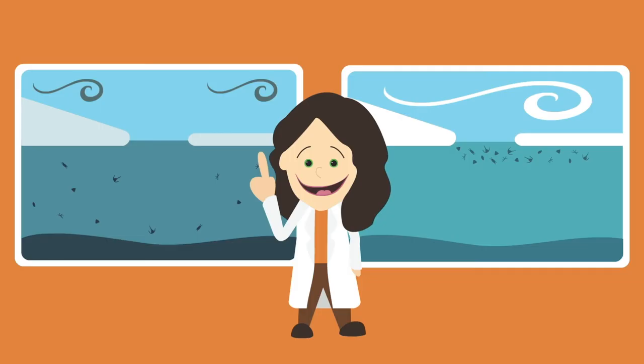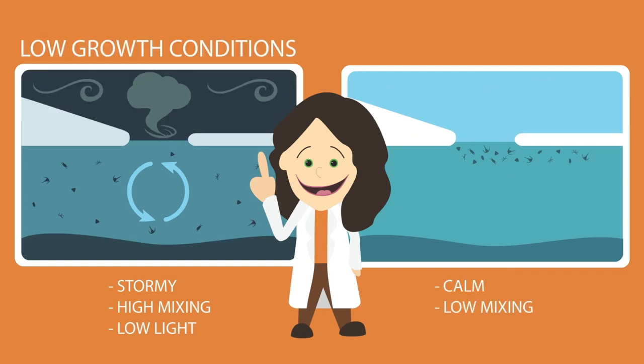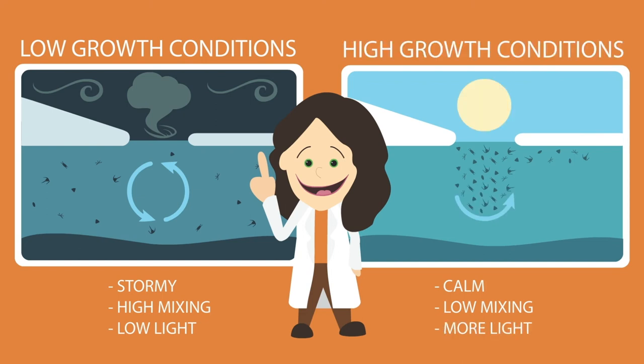Polynias are exposed to environmental conditions between two extremes: stormy, high-mixing, low-light, and low-growth conditions, versus calm, low-mixing, more-light, and high-growth conditions.